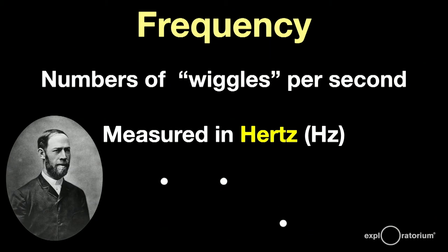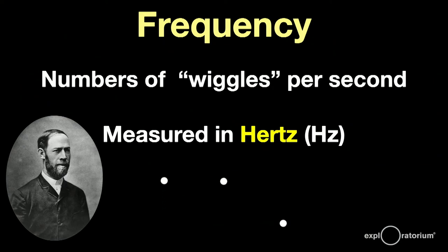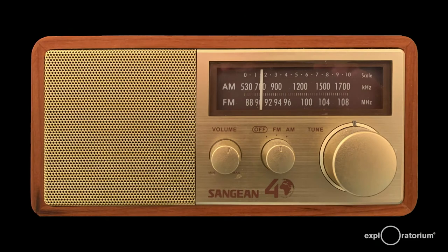If something is vibrating at 10 Hertz, it's vibrating 10 times per second. The left dot you see here has a lower frequency, the middle dot a medium frequency, and the right dot has a higher frequency. You may be familiar with Hertz if you're old enough to have listened to your music on one of these. Kids, this is called a radio.